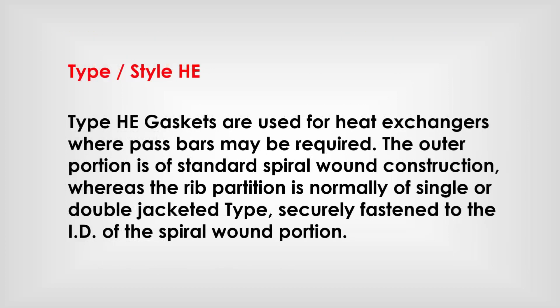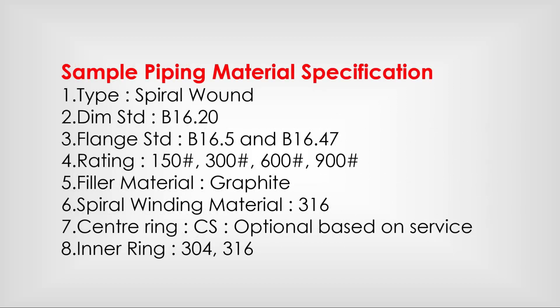Type style CG gaskets are used for heat exchangers where pass partitions may be required. The outer portion is of standard spiral construction, whereas the inner portion is normally of single or double jacket type, securely fastened to the ID of the spiral wound portion.